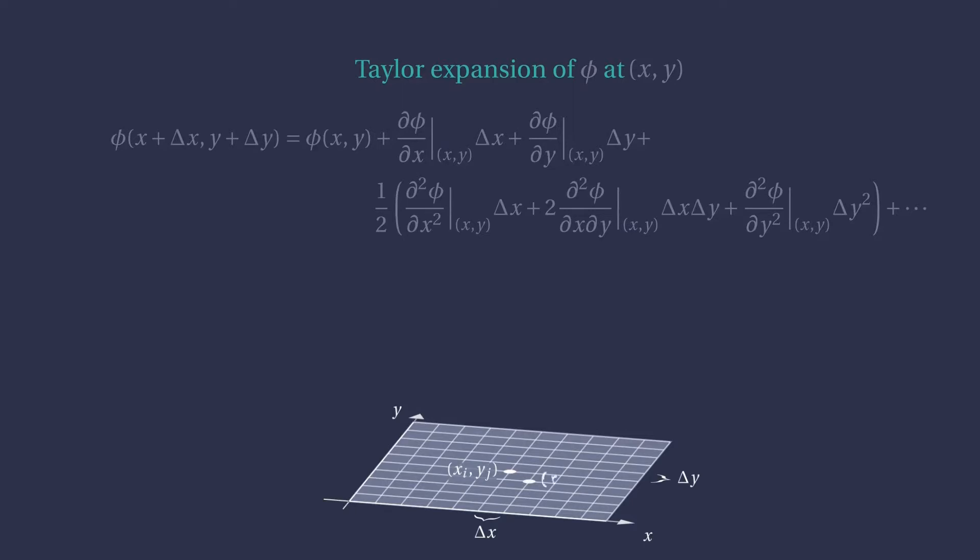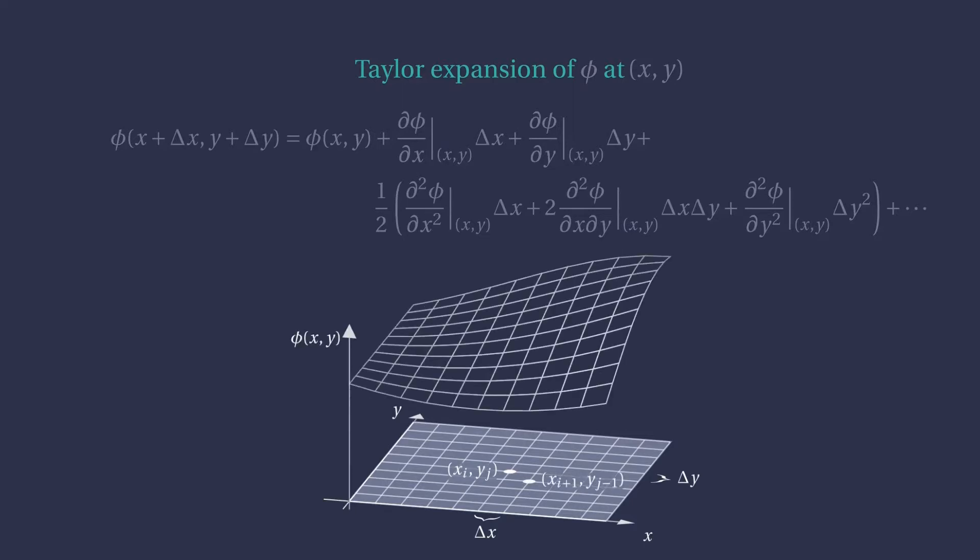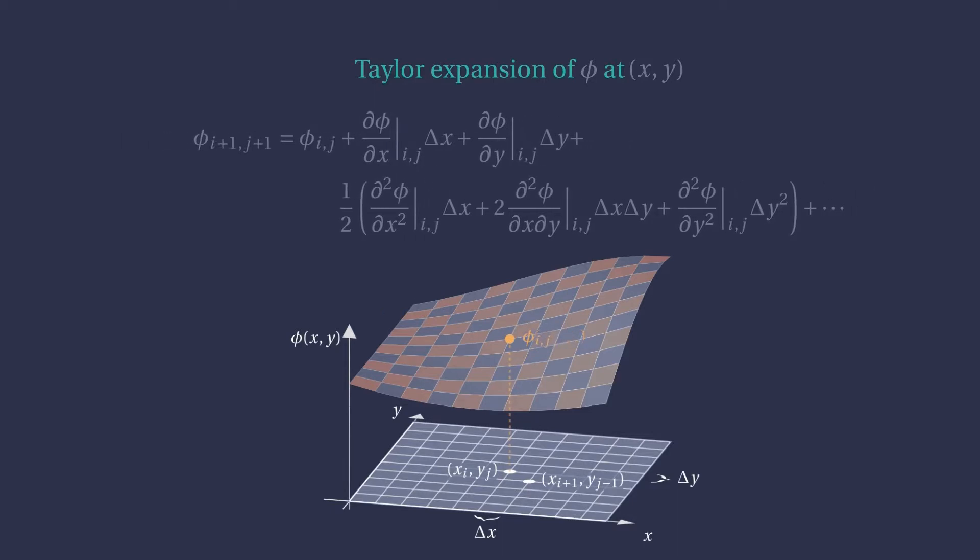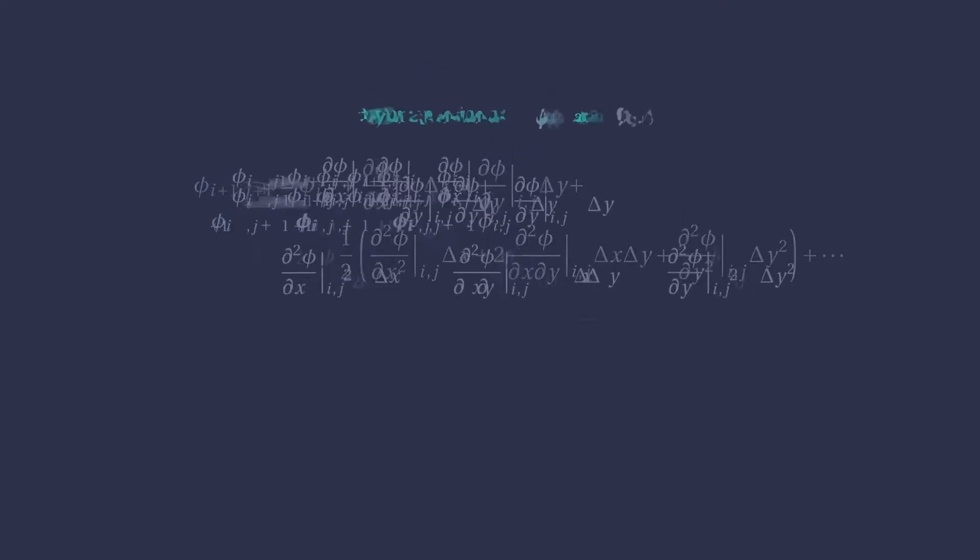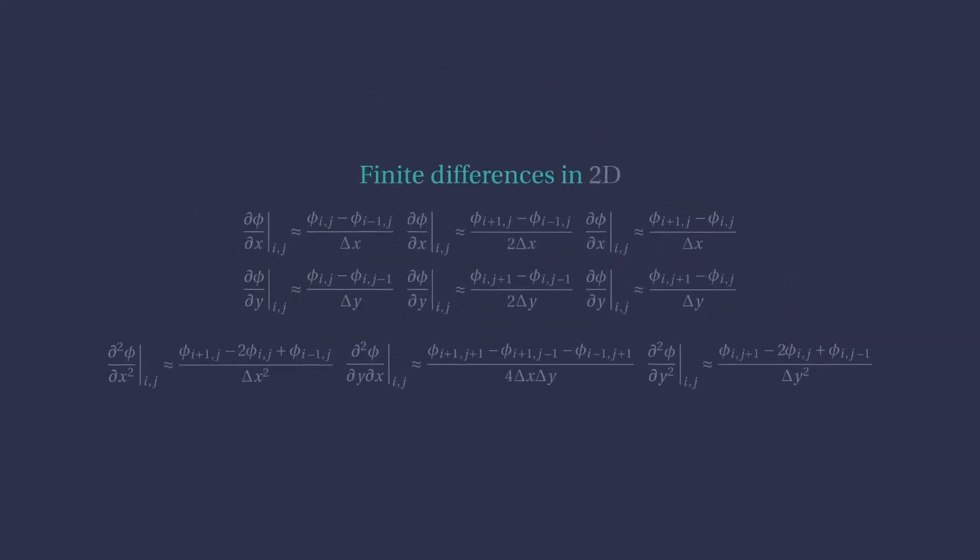Here, we will use the same notation as before, replacing the arguments of the function by the subscripts corresponding to the nodes on the grid. Using the same type of arguments, we find the following finite differences where the forward and backward differences are first-order accurate and the central differences are second-order accurate.